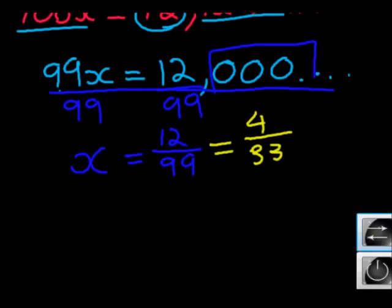Let's just check our answer again. 4 divided by 33. What answer you get? 0.121212.